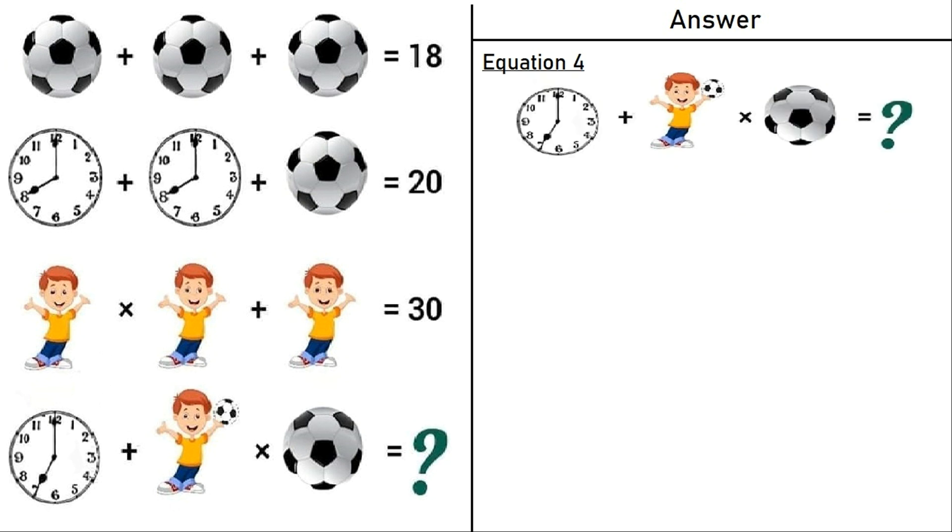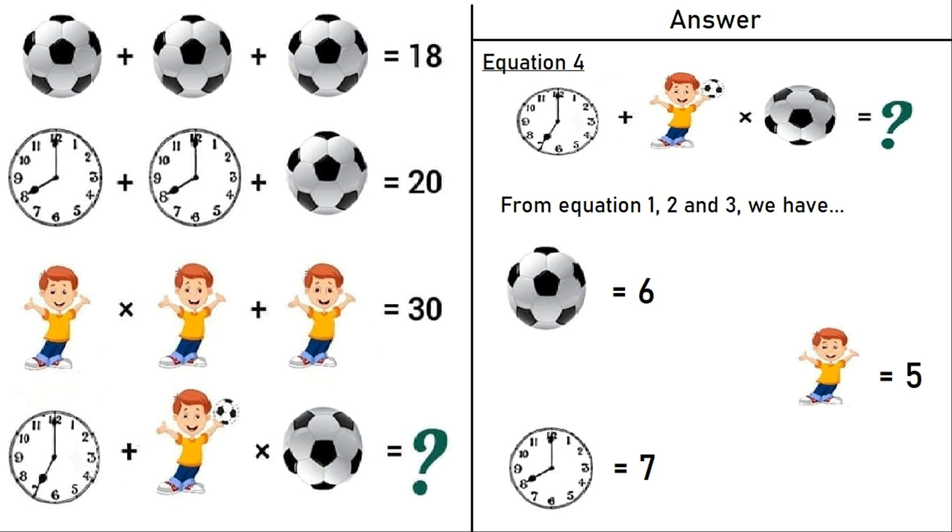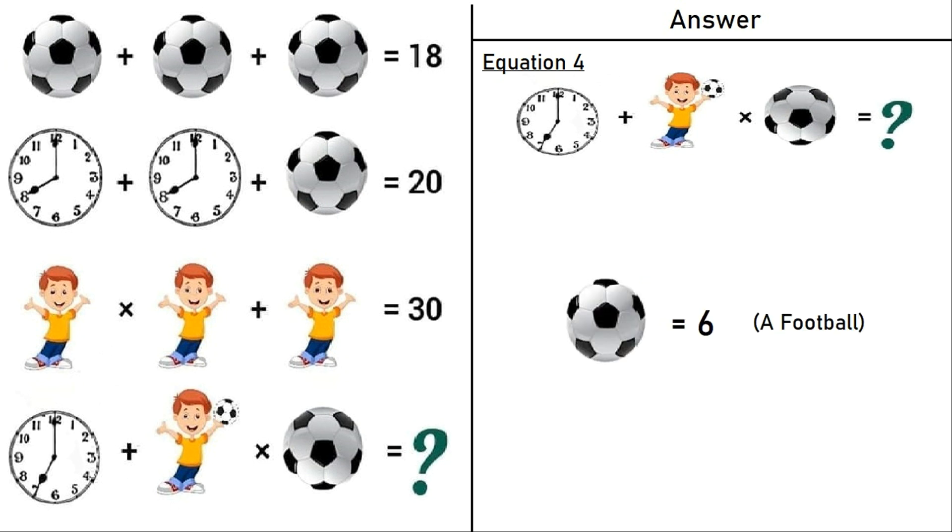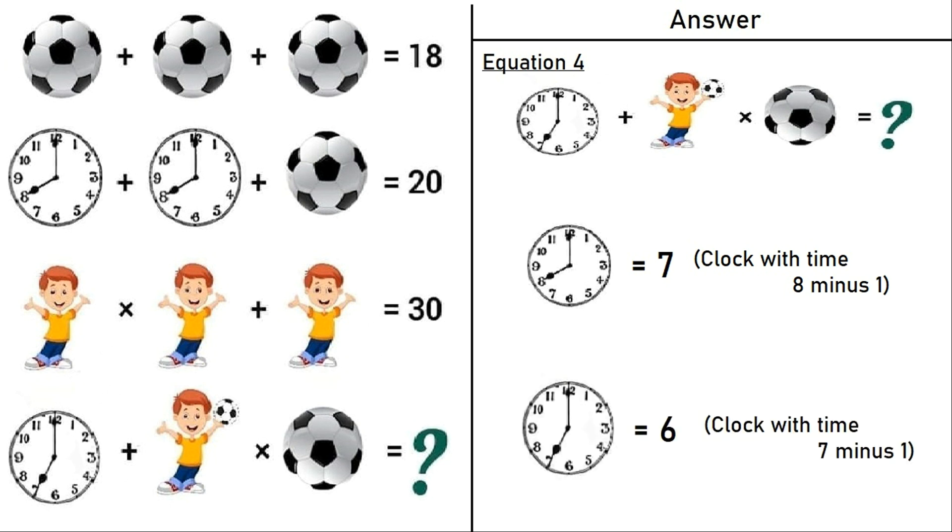Now moving on to the last equation which is equation number 4. From equations 1, 2 and 3 we have a football is equal to 6, a clock is equal to 7, a boy is equal to 5. The clock in equation 4 is equal to 6 because a clock with time 7 minus 1 is equal to 6.